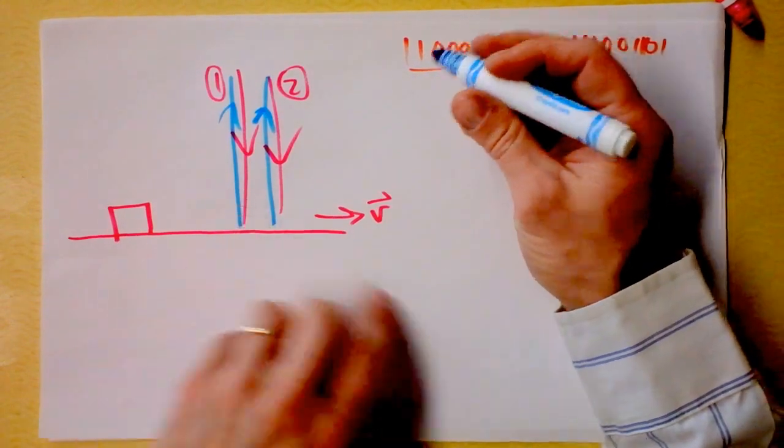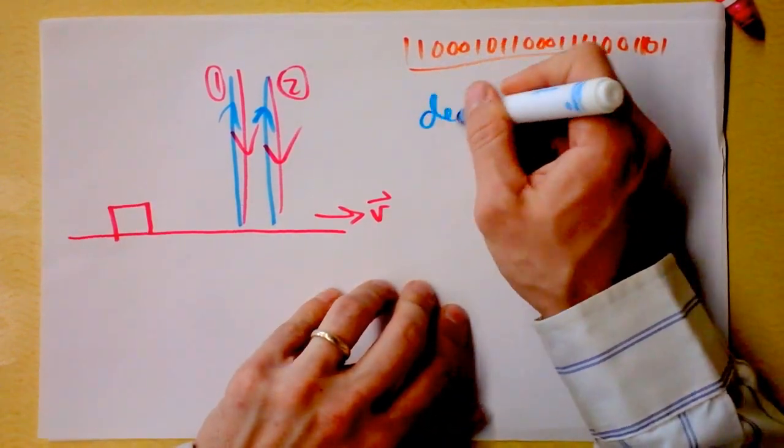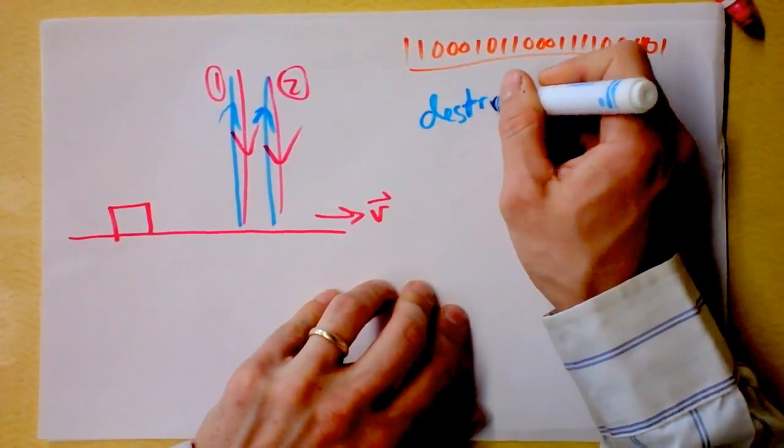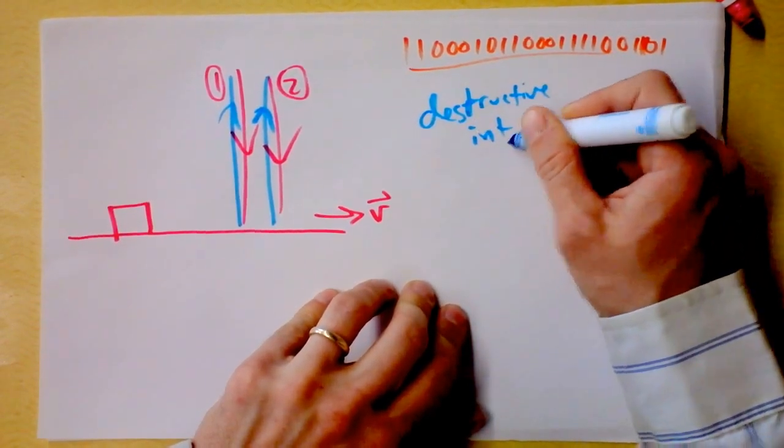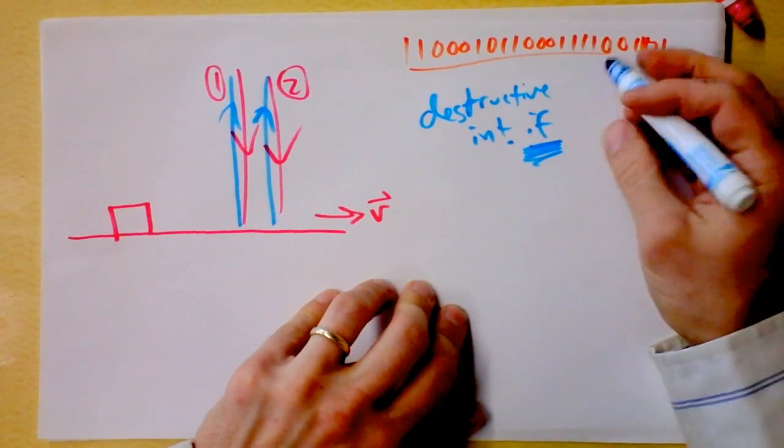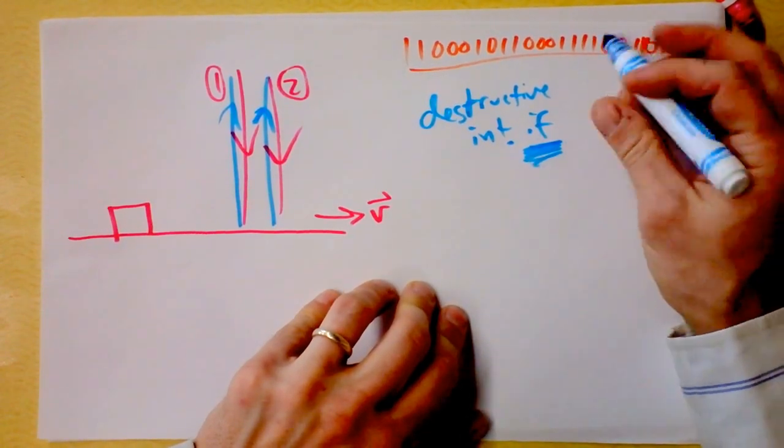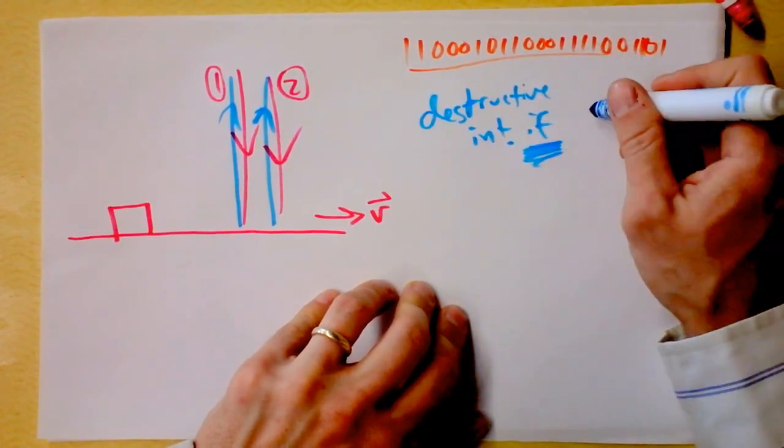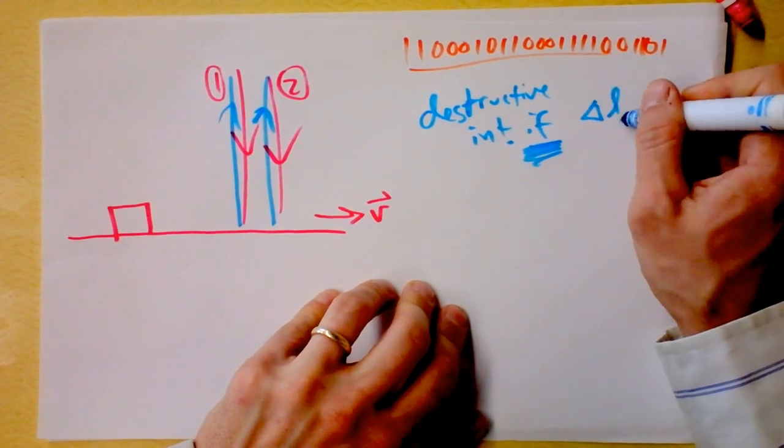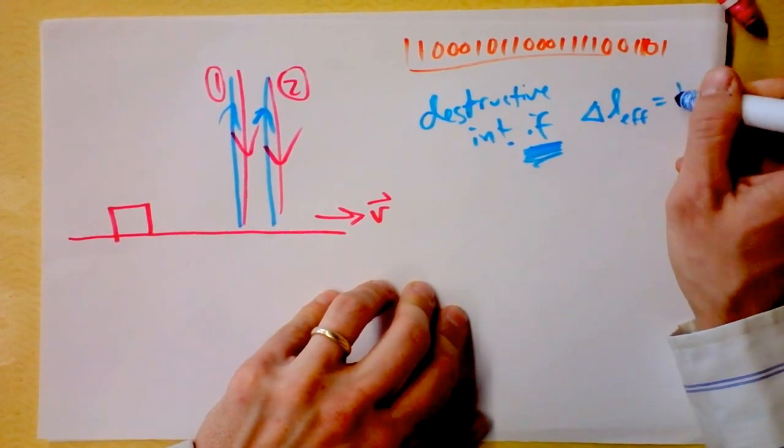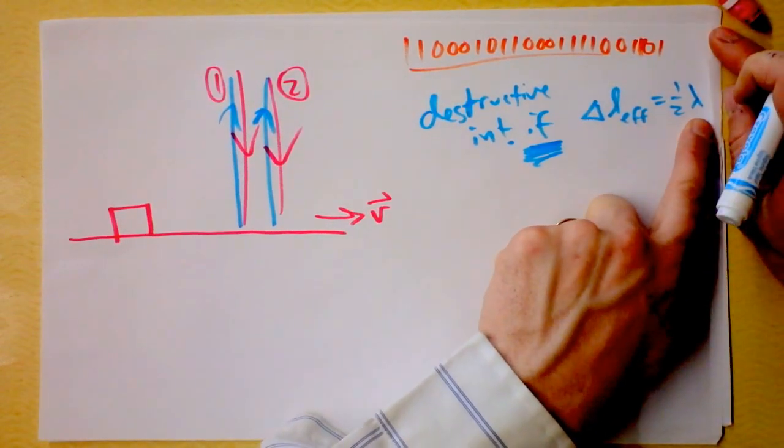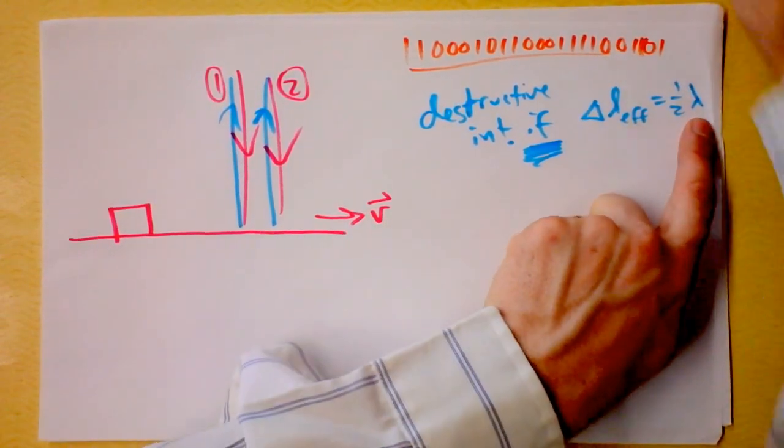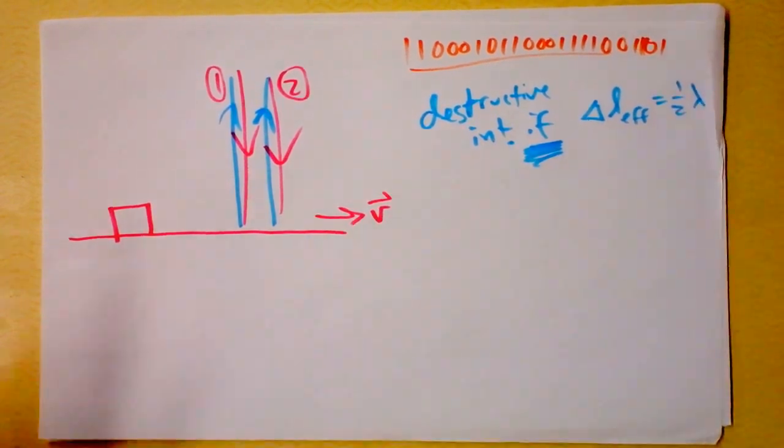But you know what would cause destructive interference? You get destructive interference if, and only if - well, I guess if we have some multiple of - if this effective path length is one half of a wavelength, because that means that one wave would be a half wave out of phase with the other wave, and they would totally kill each other for all times.